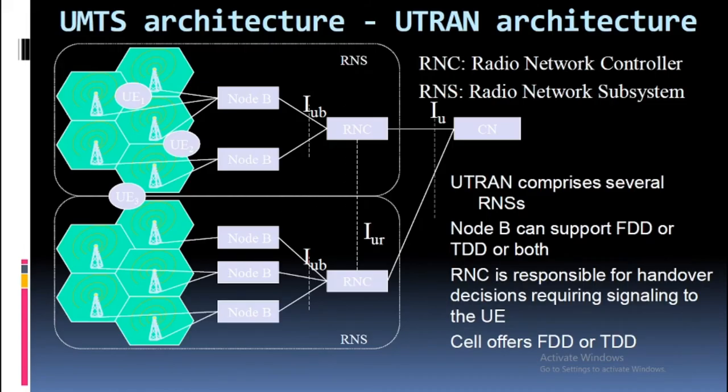UTRAN architecture comprises several RNSs. Node B can support FDD, TDD, or both. The RNC (Radio Network Controller) is responsible for handover decisions requiring signaling to the UE. Each cell offers either FDD or TDD operation.